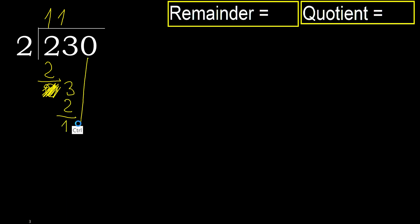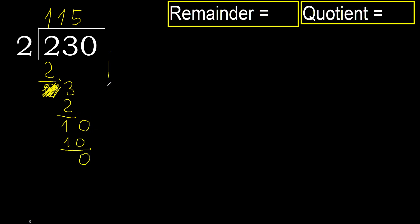Subtract, next — 10. 2 multiplied by 5 is 10, which is not greater. Subtract 0. Next — that is not a number, therefore finished.